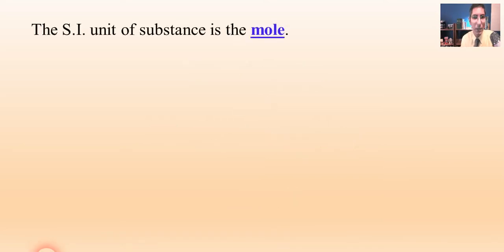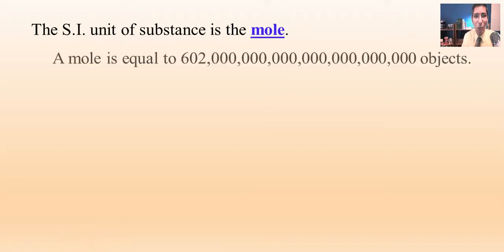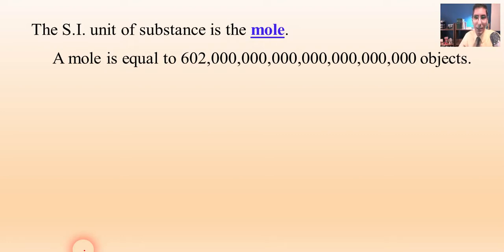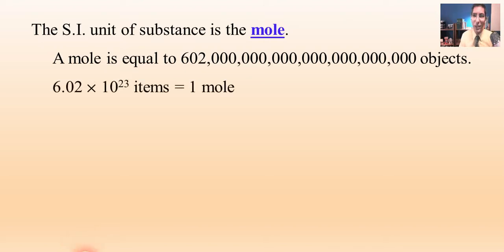When we talk about what is a mole, it is basically the SI unit of substance. A mole is essentially defined as 6.02 times 10 to the 23rd objects, approximately. This is rounded off to three significant figures. In the American way of reading numbers, we'd say 602 sextillion. In other places, they would read that differently. So let's just use scientific notation and say it's 6.02 times 10 to the 23rd items — that's how many things there are in a mole.